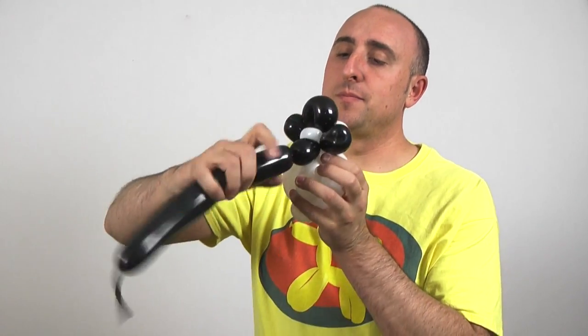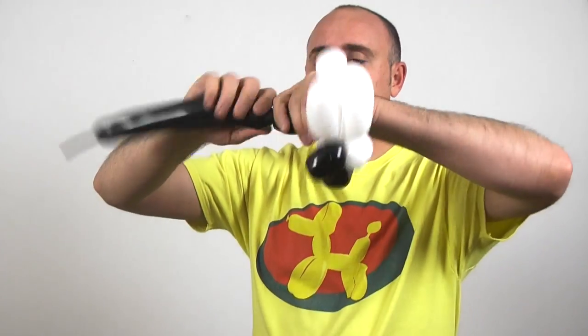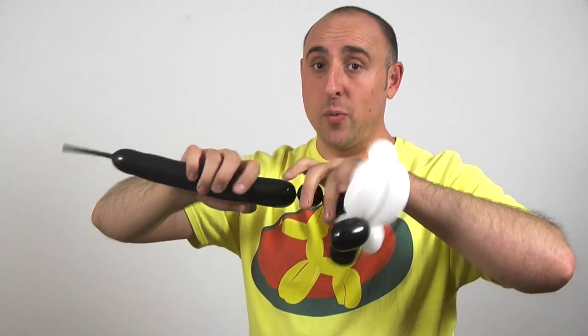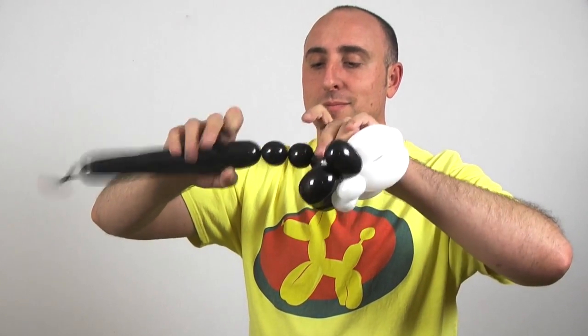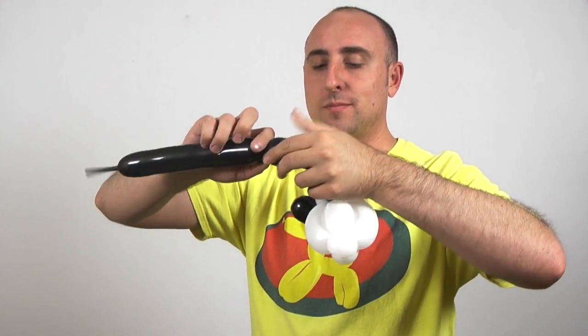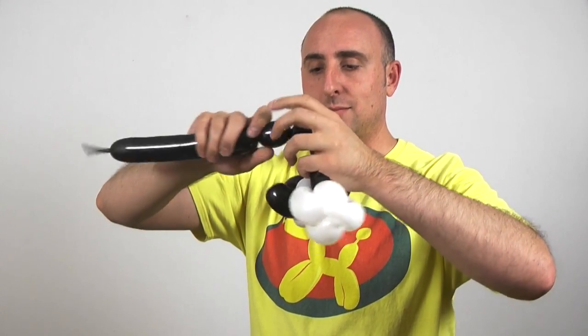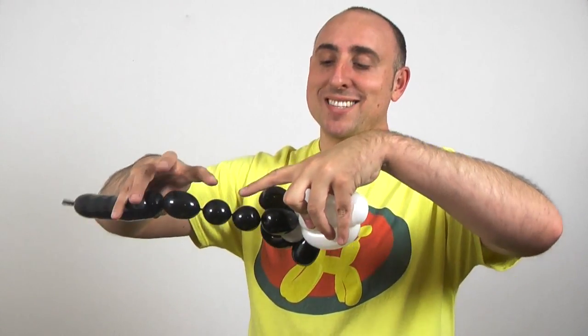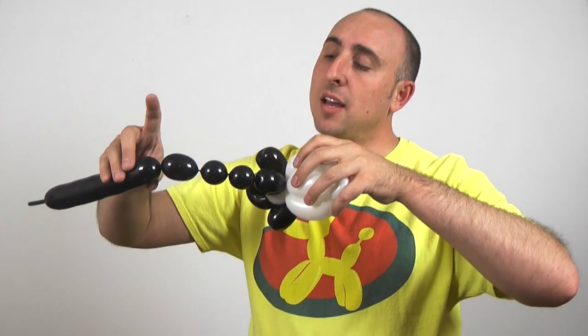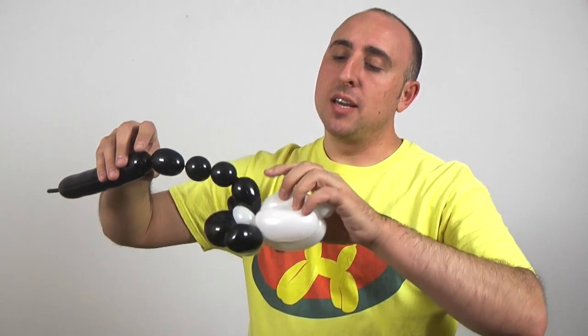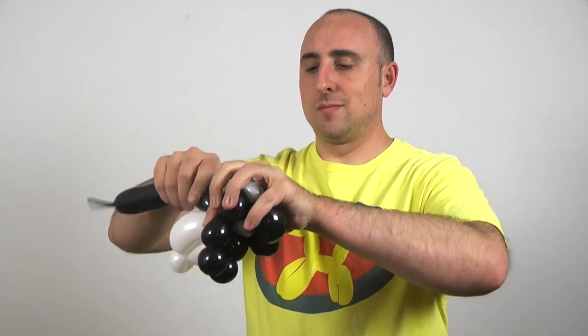For the legs, I'm going to twist a two inch bubble. A one inch bubble. Another one inch bubble. And another two inch bubble. So these two inch bubbles here should be the same size. And these one inch bubbles here should be the same size. Now we want to twist this seam into this white pinch twist here. So you should have front legs that look like that.